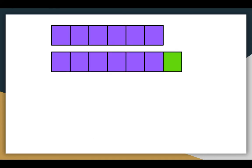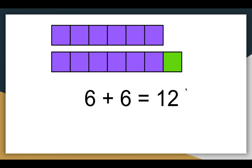Take a look at one more example. Look at the purple cubes for your doubles fact and the green one to help you make your new equation. What doubles fact would you use to help yourself solve this? You can pause the video now and write down your doubles fact. I can see that there are six purple cubes on the top and six purple cubes on the bottom. So the doubles fact I could use would be six plus six, which I know is 12.